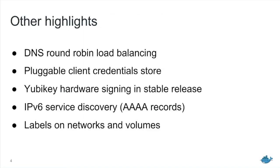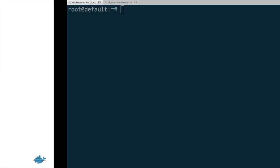We've also got in this release a whole bunch of other neat stuff. One of the most exciting things is in Docker's networking system — we've now got rudimentary support for load balancing between different containers. This is done by using DNS round robin. The idea is that if you start multiple containers which have the same alias — given the same name essentially — and you try to resolve that name from another container inside the same network, it will randomly return the IP addresses of those containers. The best way to demonstrate that is using a demo.